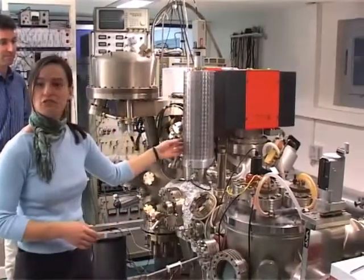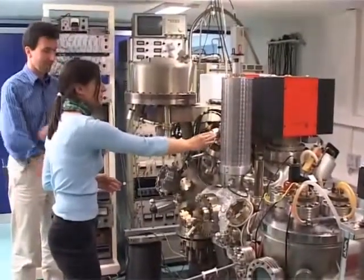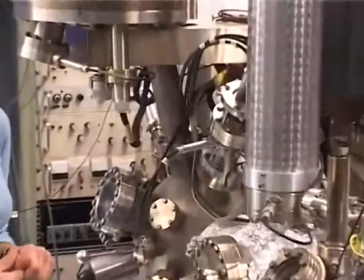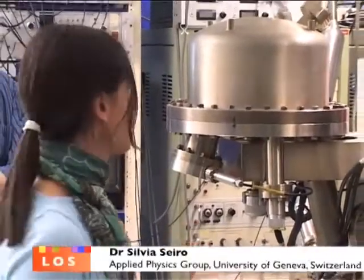We can do electron diffraction on the surface to check crystallinity. We can look at the surface also by scanning electron microscope. We can do STM, scanning tunneling microscopy, and x-ray photoelectron spectroscopy.